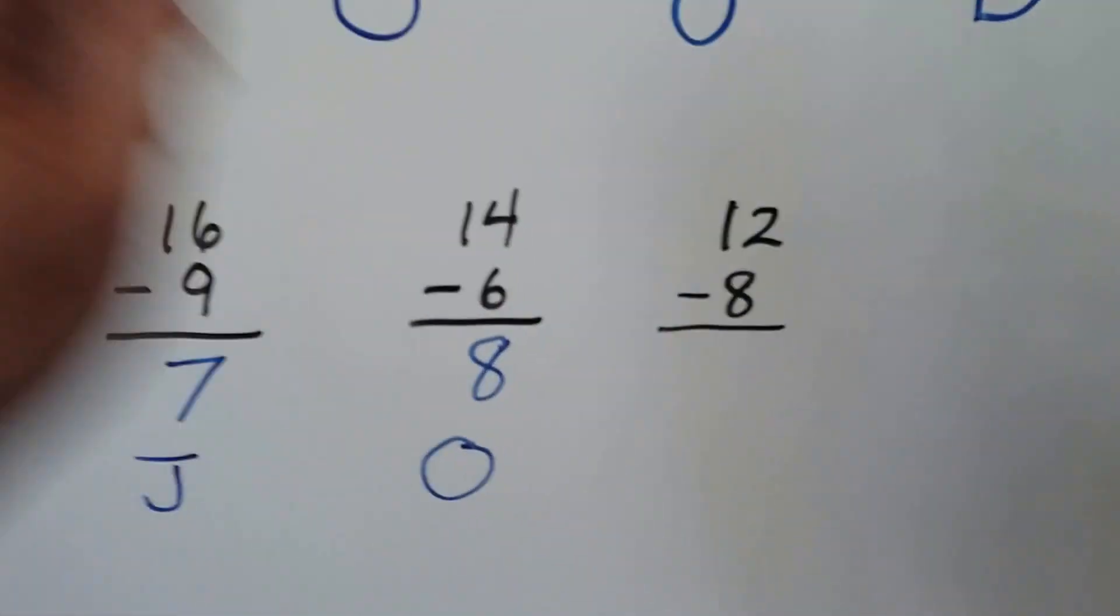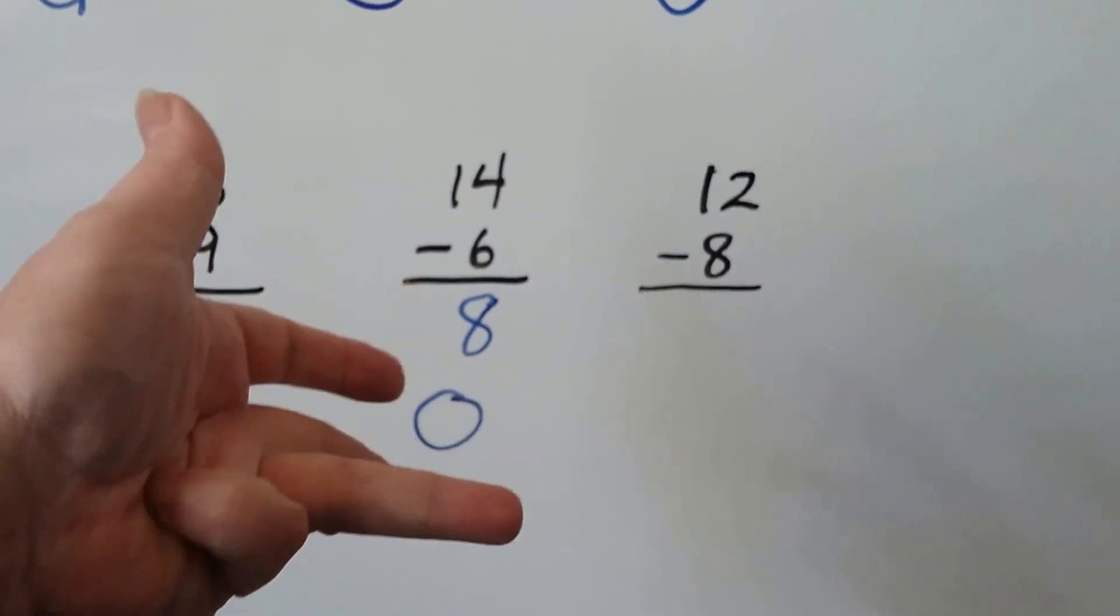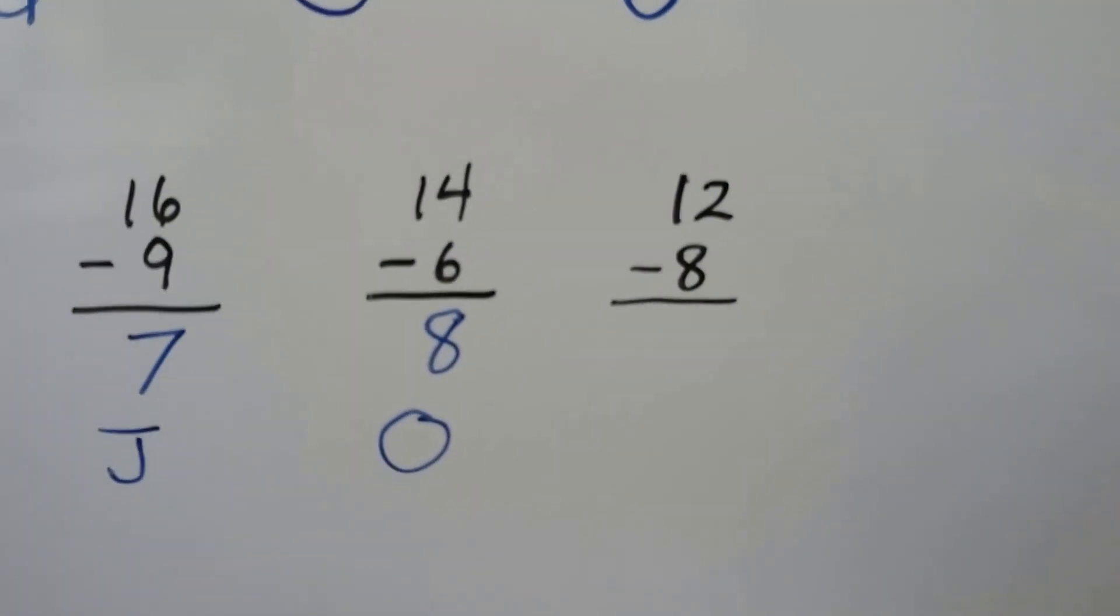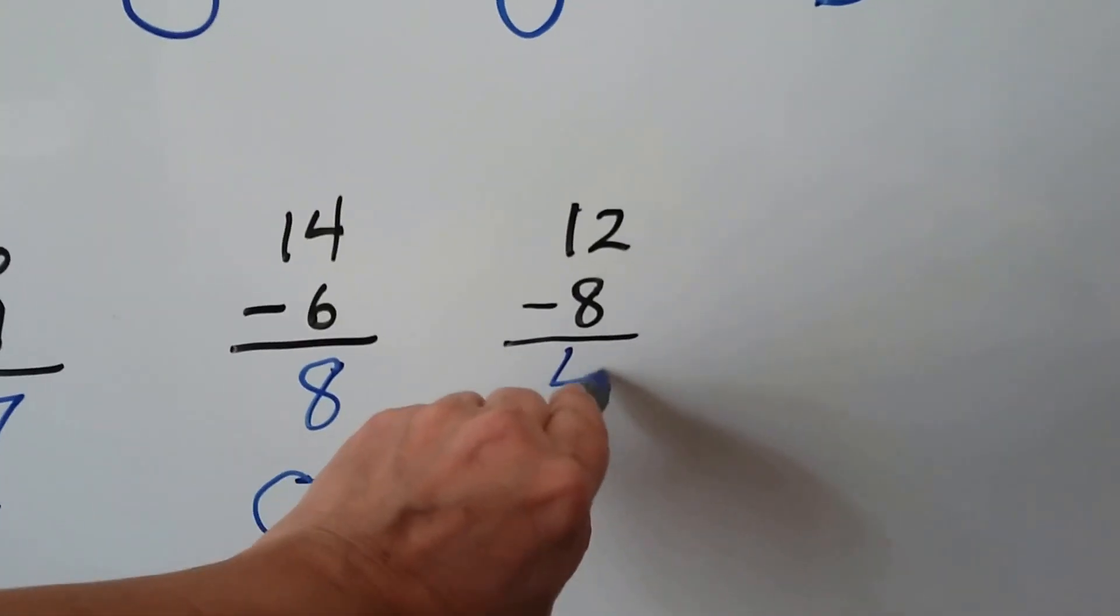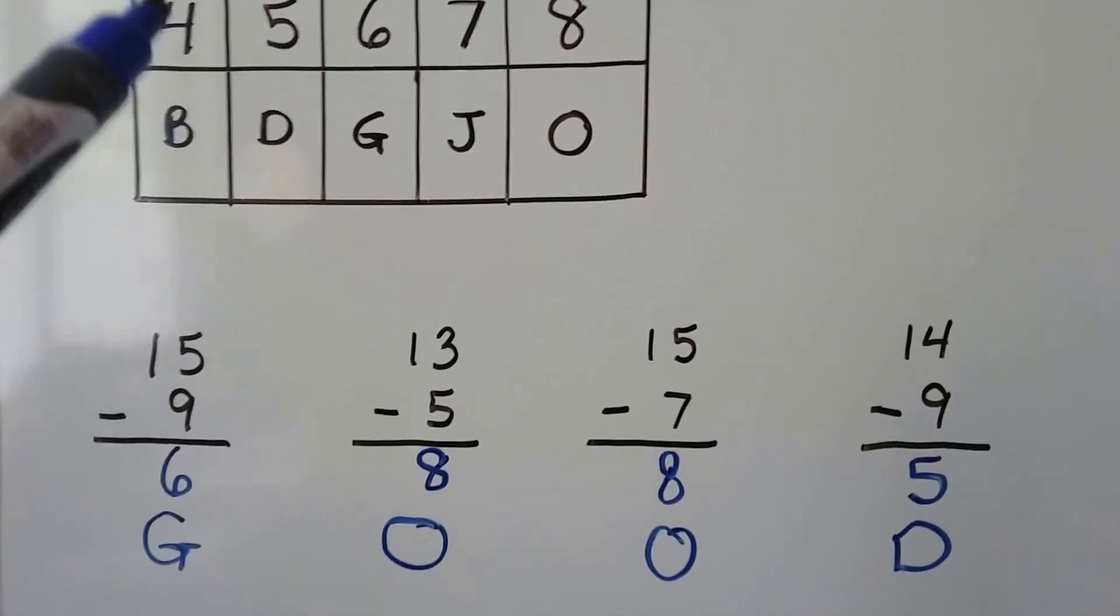Now we have 12 minus 8. Let's try counting back. 11, 10, 9, 8. That's 4. We look in our code chart and we see a 4 is a B.